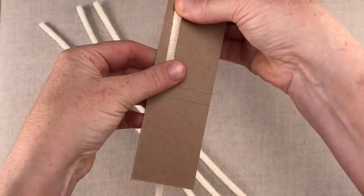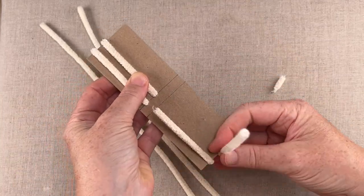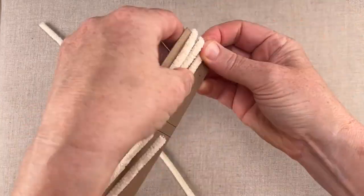To make the pipe cleaner inserts for the legs, you want to fold them around the card and trim off any extra so you have a little gap where those lines are in the center of your card.